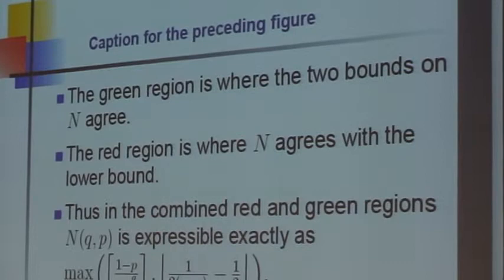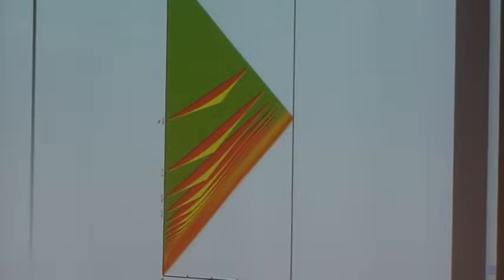While the red region is where N agrees with the lower bound. And in the combined red and green regions, N is expressible exactly as this max. So in the combined red and green regions, everything but the yellow, one has a very good formula that the capital N is.